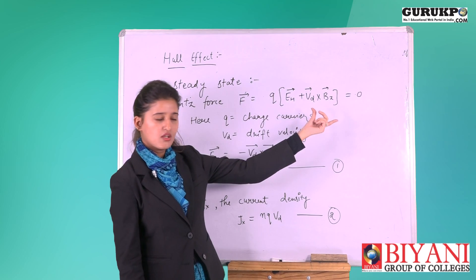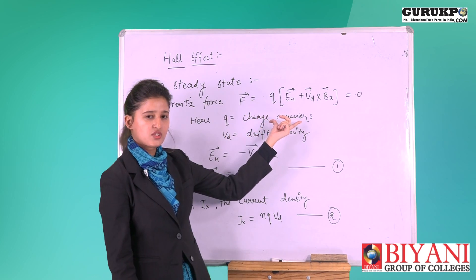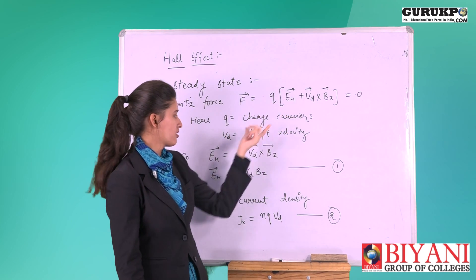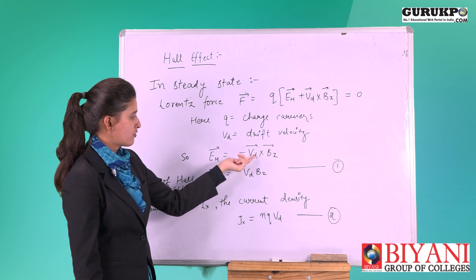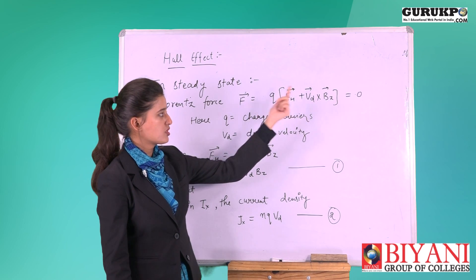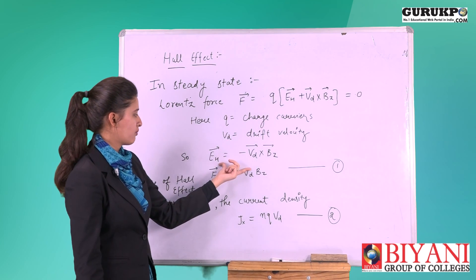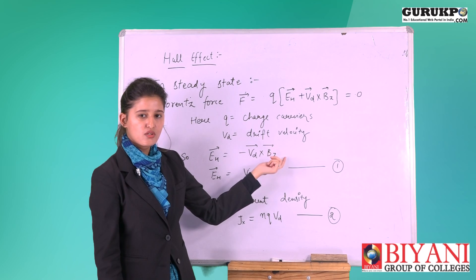In steady state, force will equal to zero. Here Q is charge carrier, whether it is holes or electrons, and V_d is drift velocity. E_h equal to minus V_d cross B_z. Our equation becomes E_h equal to minus V_d cross B_z.